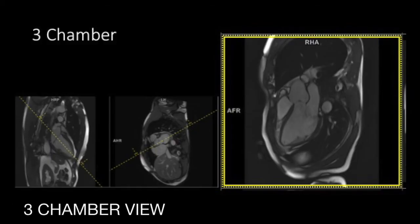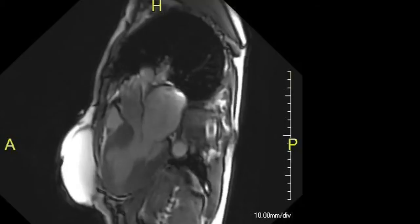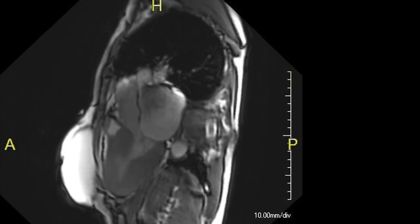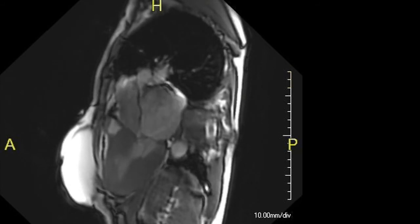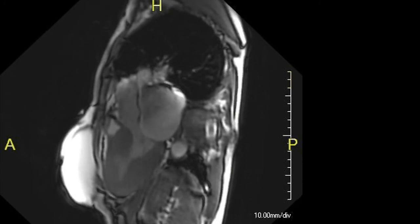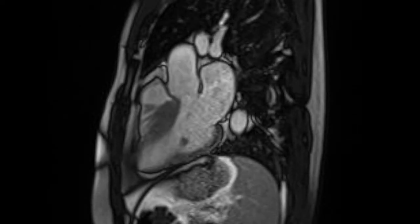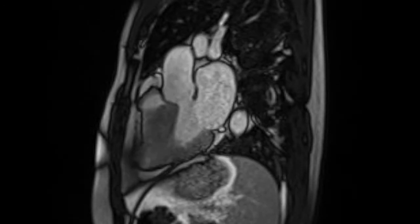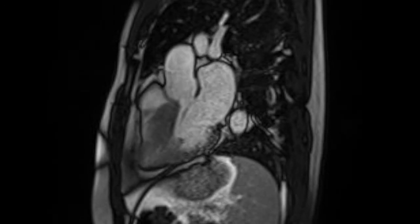Another commonly used view is the three-chamber view of the heart, which is derived through the two-chamber and short axis views. In the two-chamber view, the plane passes through the center of the mitral valve and the left ventricular apex. In the short axis view, the plane passes along the root of the aorta. The three-chamber view is very important because it demonstrates systolic anterior motion of the mitral leaflet, which is a pathognomonic sign of hypertrophic cardiomyopathy.